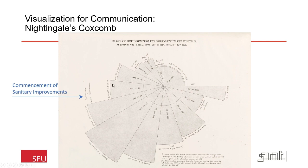She introduced various sanitation measures, and that very significantly impacted the prognosis of all the people staying in the hospital — it dropped the death rate very significantly. You're intended to read this thing clockwise: death rates are high, she introduces sanitary improvements, and death rates fall very significantly. It's a very strong indication of the importance of sanitation and clean hospitals, which was a new idea in the mid-1850s.